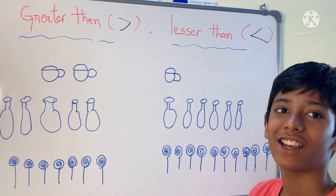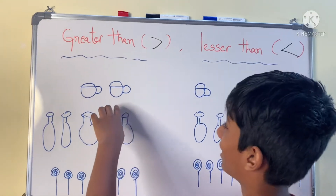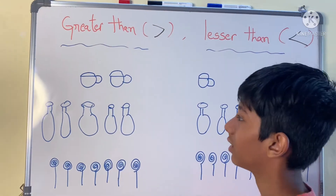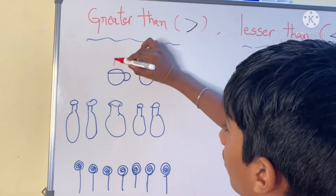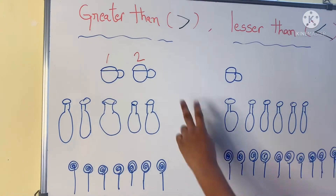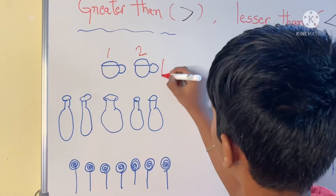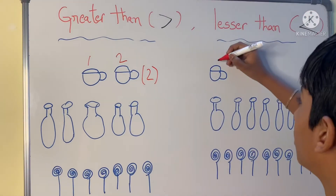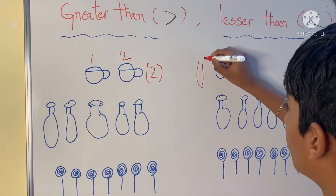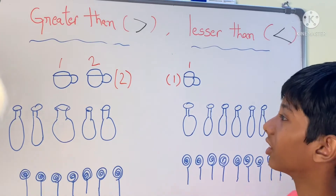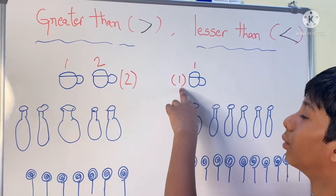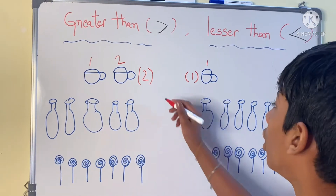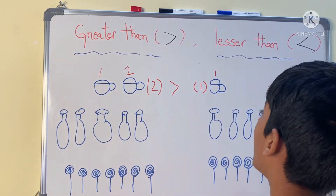Now friends, let us do this tricky question. How many cups are there? 1, 2 — there are 2 cups. How many are in the other group? Just only 1. So what is the relation between 2 and 1? Is it greater than or lesser than? So 2 is greater than 1.